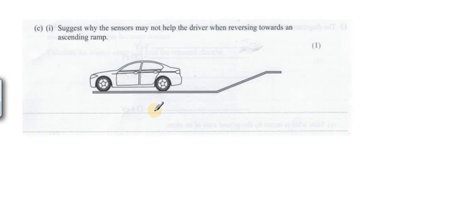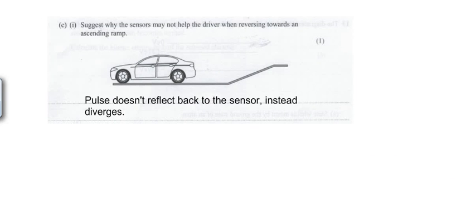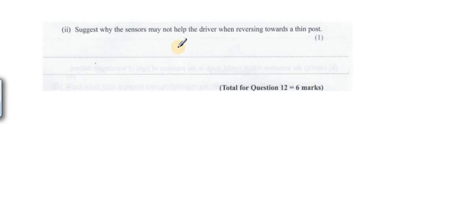Part C: Suggest why the sensors may not help the driver when reversing towards an ascending ramp. Here is the case - this is an ascending ramp. If the pulse is sent, there is a chance that the pulse would not reflect back to the sensor, instead it will diverge in any other direction. So it will not be received by the sensor to detect the distance. The pulse does not reflect back to the sensor, instead it will diverge.